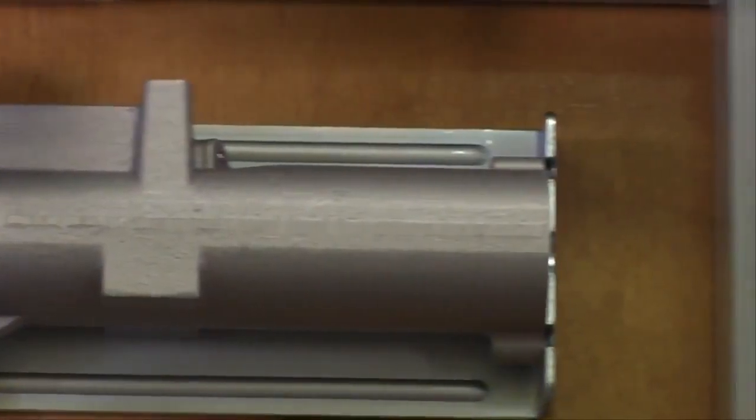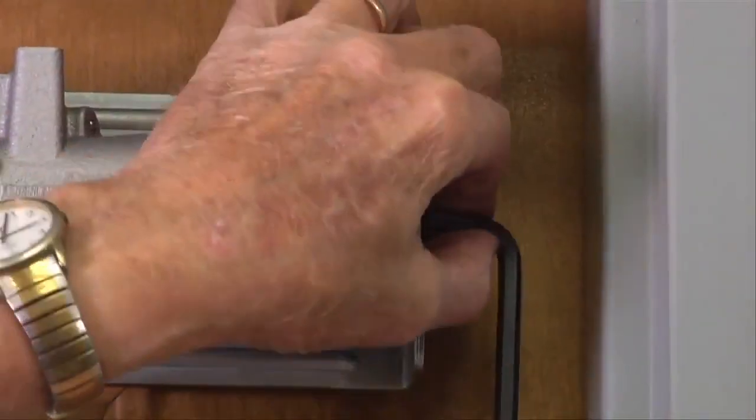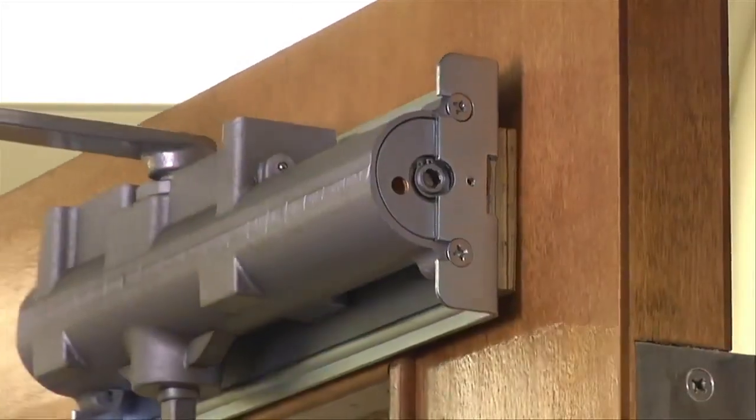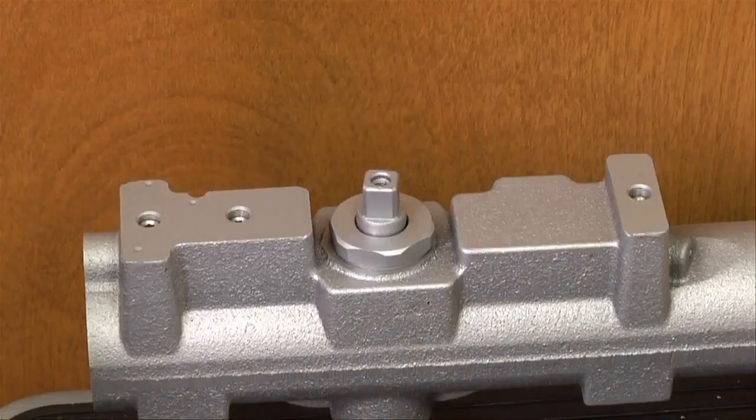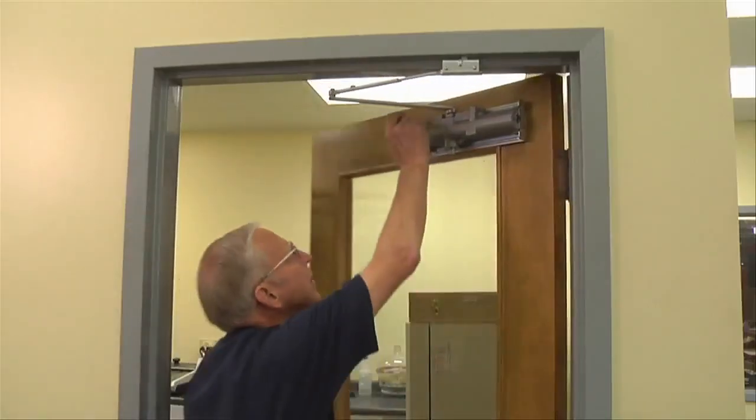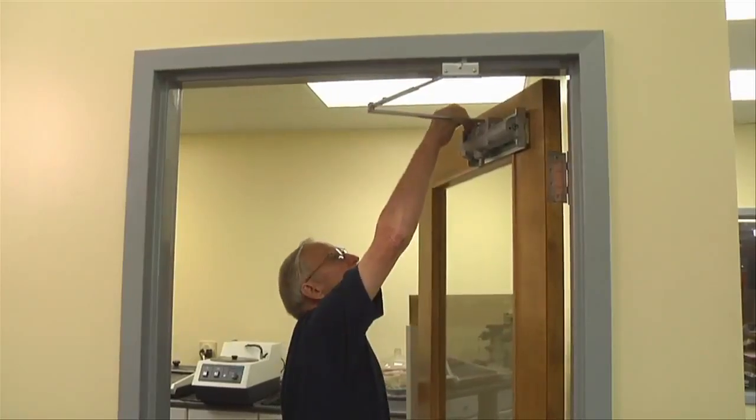The spring adjust screw may be adjusted to obtain the appropriate closing force and to accommodate for varied door sizes and latching hardware. Our cast iron closers have easily accessible valves for adjusting back check, sweep and latch speed functions.